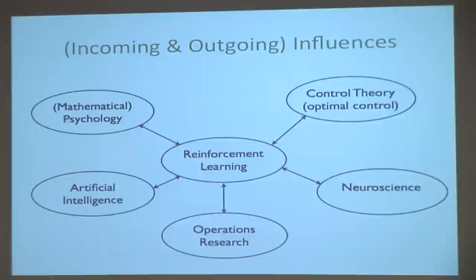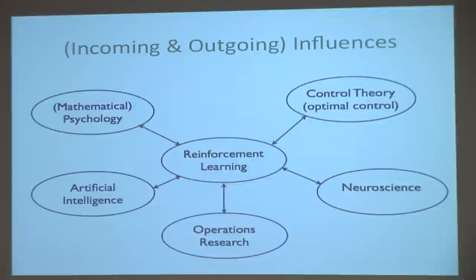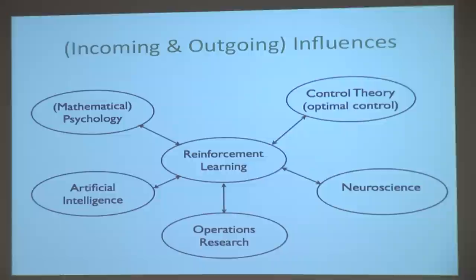Another way to show how reinforcement learning is different is to look at its influences. Reinforcement learning really started in mathematical psychology — psychologists were interested in how animals learn, and mathematically-minded psychologists came up with reinforcement learning algorithms to explain how animals might learn. Other inputs include optimal control, operations research, and neuroscience, because to the extent that reinforcement learning explains how animals behave, there must be reinforcement learning going on inside the brain. There's very concrete evidence for reinforcement learning inside the brain.